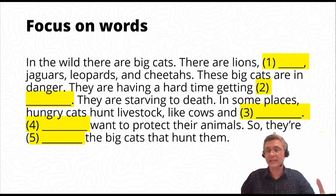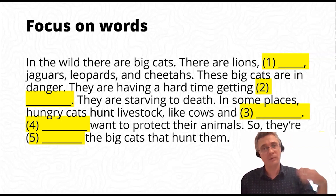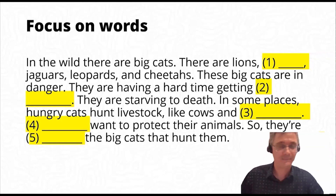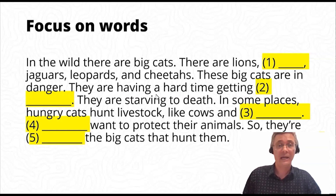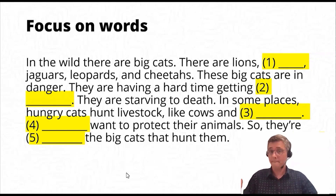Here I've taken another reading from Wonderful World and chosen and omitted words very carefully. Take a minute to think about what the missing words might be and why I chose these particular words to remove. I'm going to read the passage out: 'In the wild, there are big cats — lions, [something], jaguars, leopards and cheetahs. These big cats are in danger. They're having a hard time getting [something]. They are starving to death. In some places, hungry cats hunt livestock like cows and [something] want to protect their animals. So they [do something] to the big cats that hunt them.'